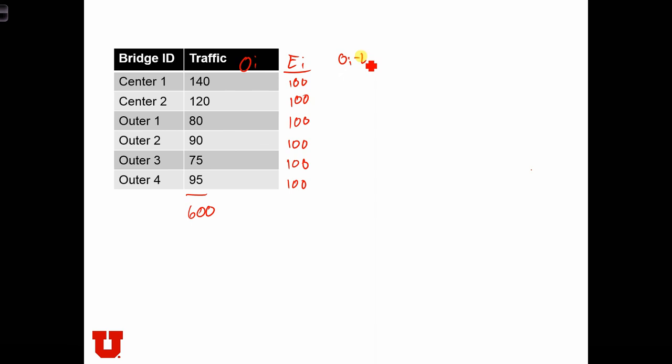The next step is to calculate OI minus EI. So in this case, we've got 40, 20, 20, 10, 25, and 5. And now we need to square that. So we've got 1,600, 400, 400, 100, 625, and 25. And finally, we need to divide this by EI. OI minus EI all squared divided by EI. And that's going to be equal to 16, 4, 4, 1, 6.25, and 0.25.